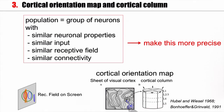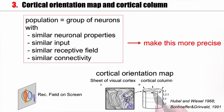Moving along, other neurons have a preferred orientation that is slightly oblique, continuing until reaching cells with a preferred horizontal orientation, then turning back to vertical. So if I walk around this very special point — the pinwheel — I find cells with vertical, oblique, oblique, horizontal, oblique, oblique, vertical orientation.